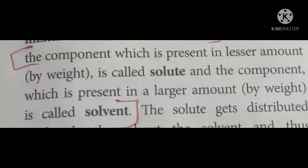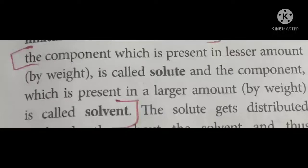Similarly, in alloys — for example a gold alloy — if you take 80% gold and add 20% copper, the 80% is the larger amount by weight and is called the solvent, and the remaining 20% is the lesser amount by weight and is called the solute. So solvent as well as solute may be of any physical state — that is, solid, liquid, or gas. Only based on the weight — the larger amount and the lesser amount by weight — we are differentiating solute and solvent.